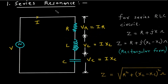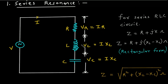Series resonance will occur in an RLC series circuit. Here we can see an RLC series circuit with an AC supply and current flowing through it. The components are resistance, inductor, and capacitor. Voltage across the resistor is Vr = I × R, voltage across the inductor is Vl = I × XL, and voltage across the capacitor is Vc = I × Xc.